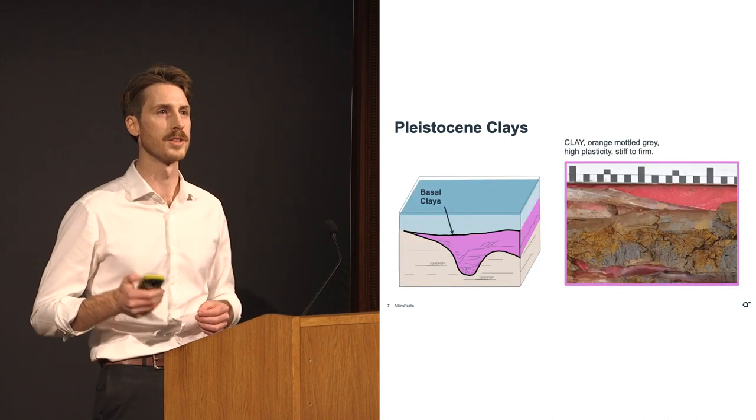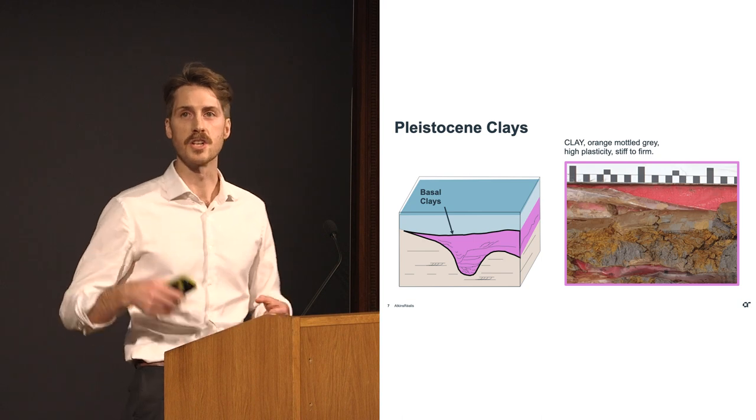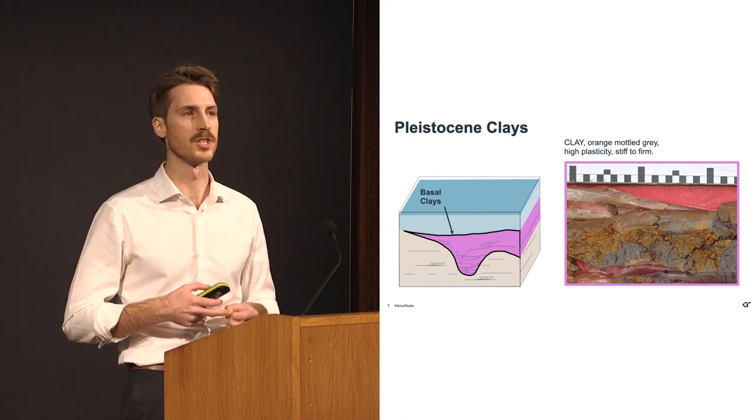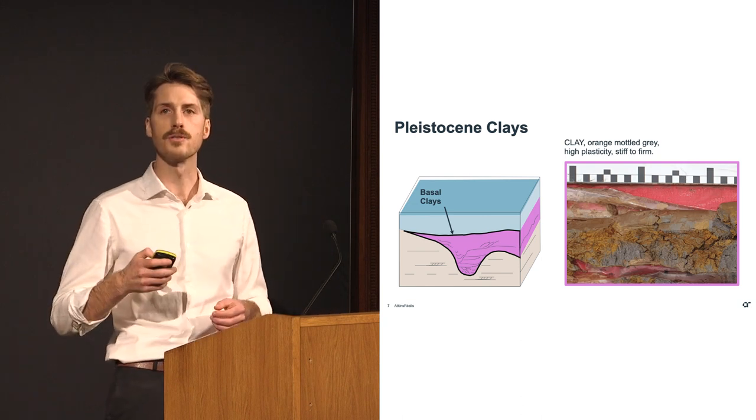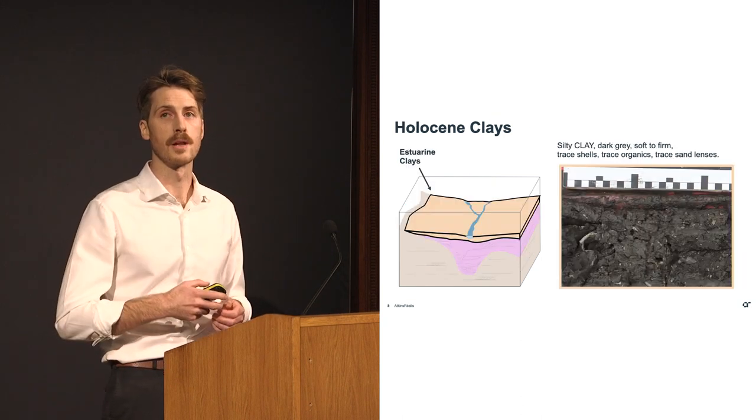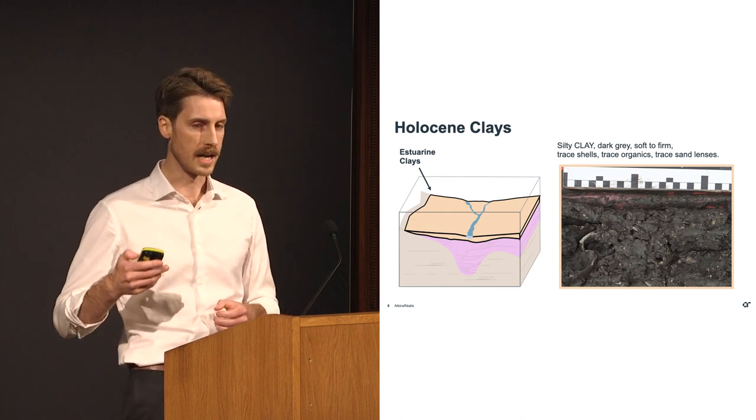The first deposit to form within this drowned river valley system is a Pleistocene clay. This is quite distinct, you can see a clip on the right-hand side, it's a grey-orange, high plasticity, very stiff. The second deposit to form, once again very distinct from the underlying material, is a Holocene estuarine clay.